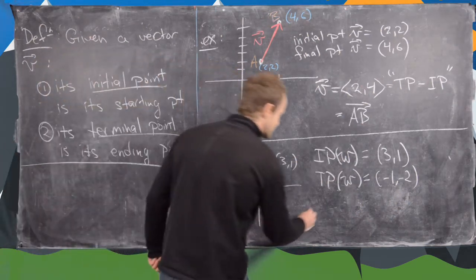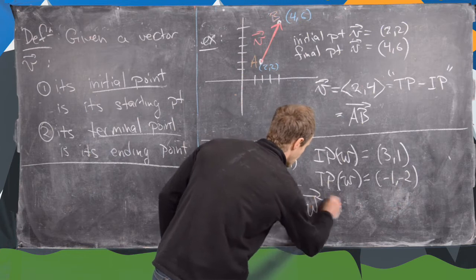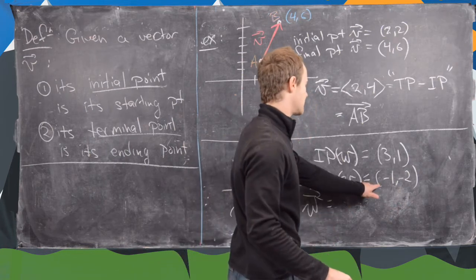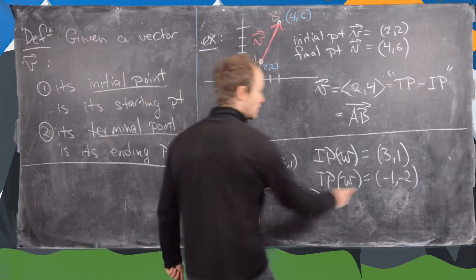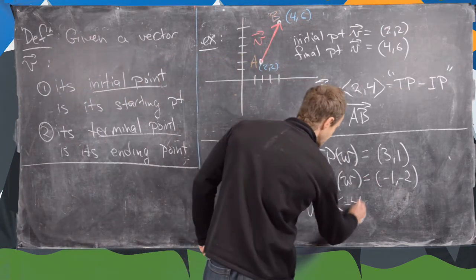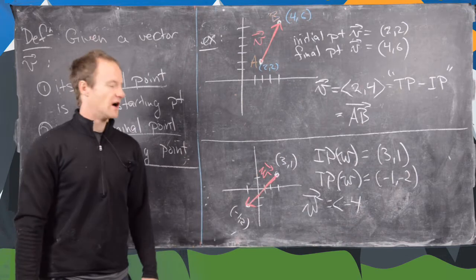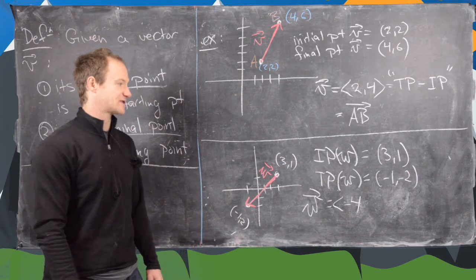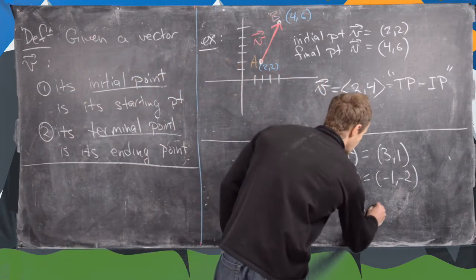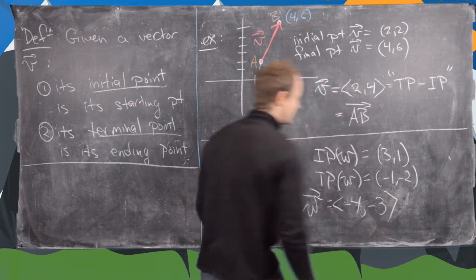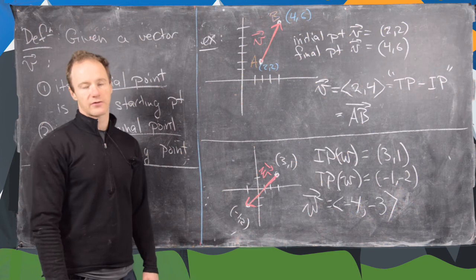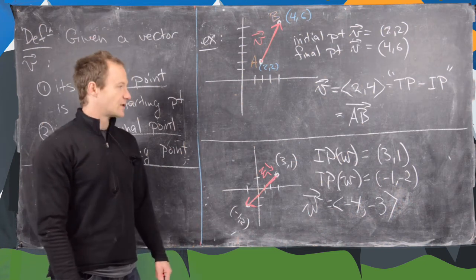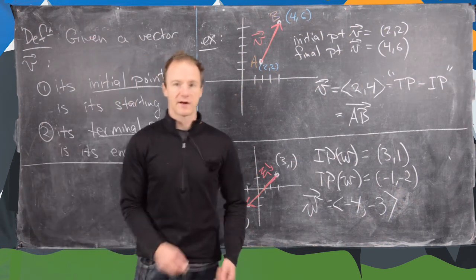Which means W is equal to, so we can think about the terminal point minus the initial point. And so notice we've got -4 units of movement in the x direction, and we have -3 units of movement in the y direction. So we get a vector (-4,-3). So I'll clean up the board, and then we'll look at some vector addition.